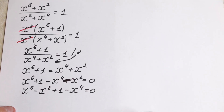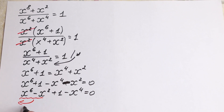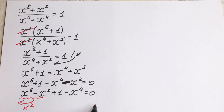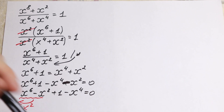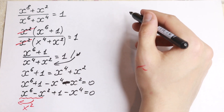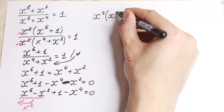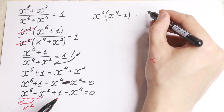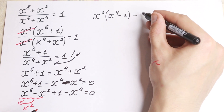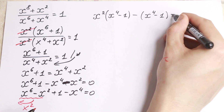Now, from these two elements we can easily factor out x², and here we can write it in another way. Factoring x² we get x²(x⁴ minus one), and minus (x⁴ minus one) equal to zero.